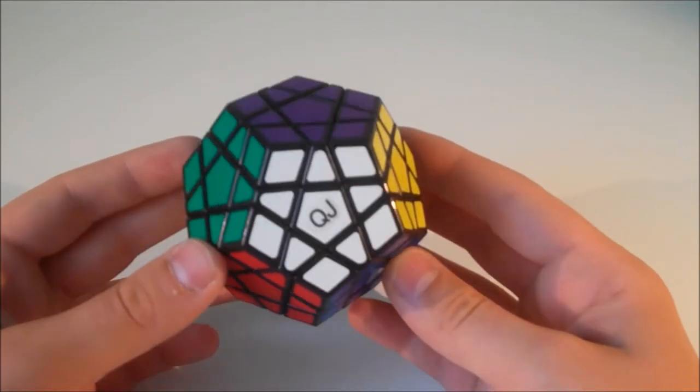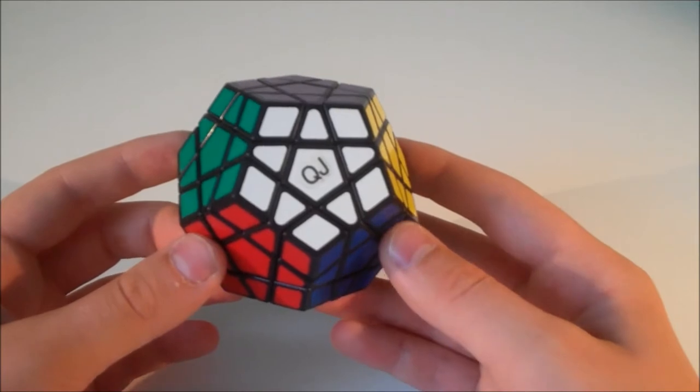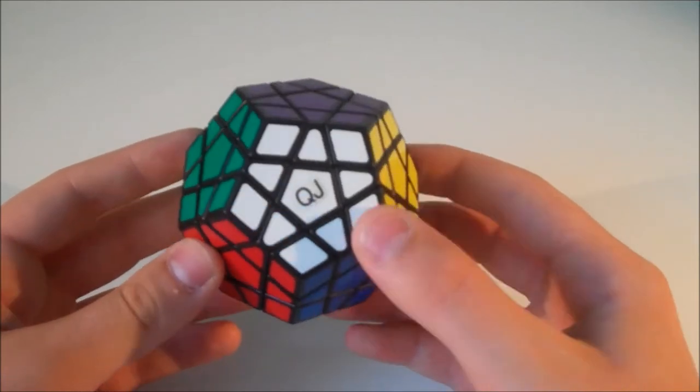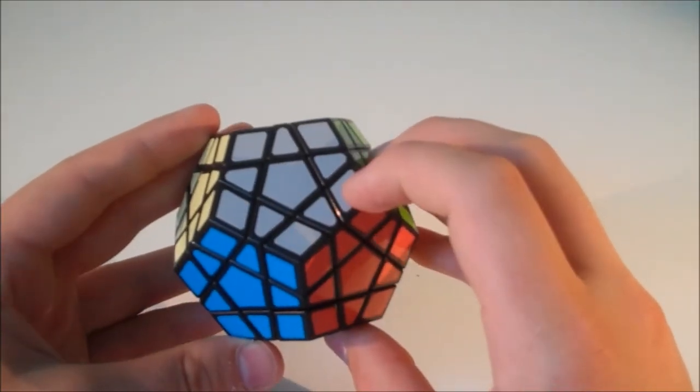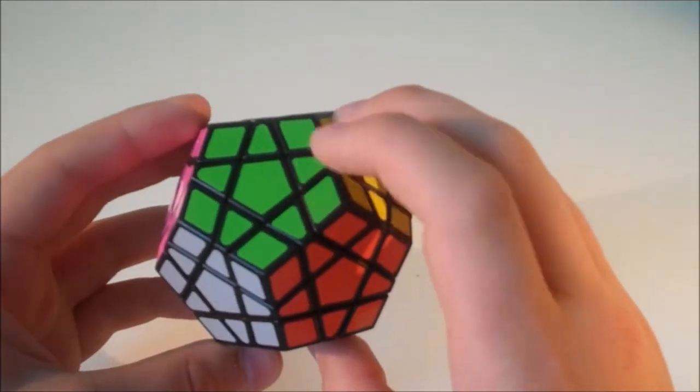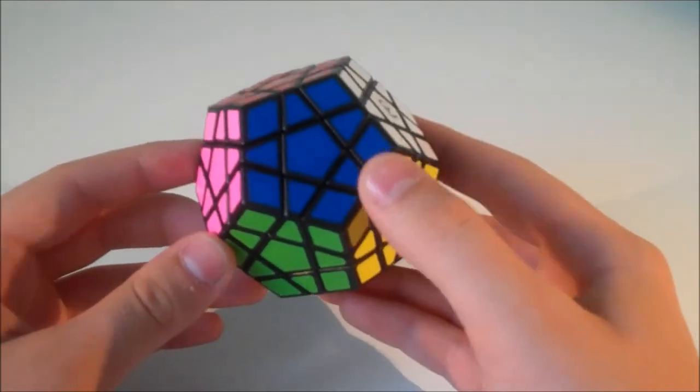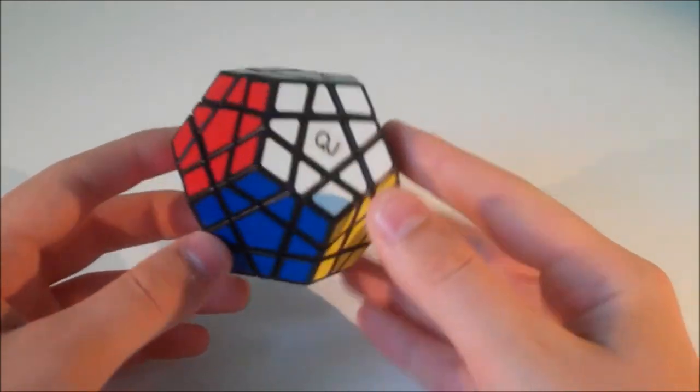The color scheme on this puzzle is really nice. The opposite sides are different shades of the same color. So opposite white we have this kind of grey color, opposite dark green we have this kind of lime green. Opposite sky blue we have this kind of dark blue, so you kind of get the idea.